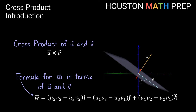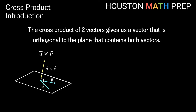Our vector w is the cross product of vectors u and v. Recall that the dot product of two vectors gives us a scalar — a real number. The cross product of two vectors gives us another vector. So these are two different ways of multiplying vectors, producing two entirely different types of objects as a result.